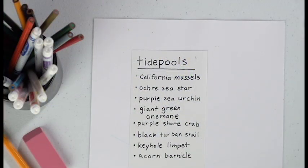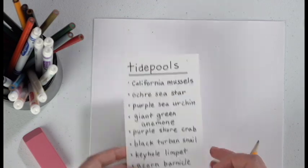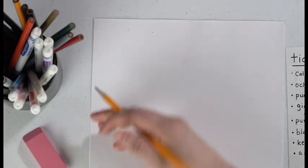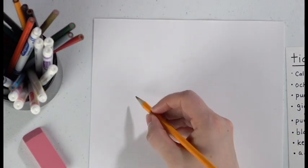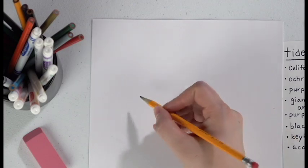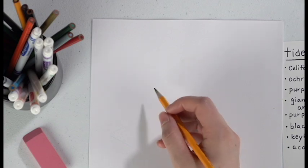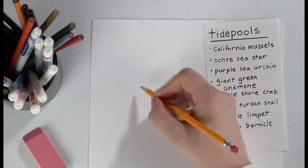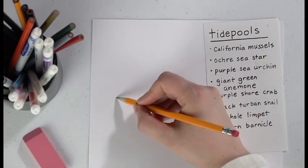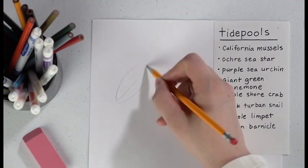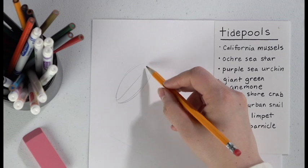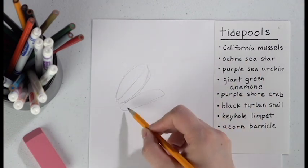Today we're going to draw some of my favorite things — critters that you find in the tide pools of Oregon. I really love tide pools and the Oregon coast. There are so many different things we can draw. Back when I was in high school I took a marine biology class from one of my favorite teachers, and he had us memorize all of the different things we'd see.